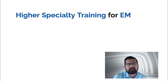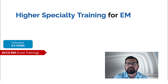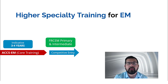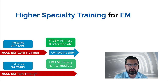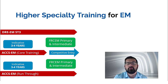Let's recap and add more detail about what higher specialty training in emergency medicine looks like. There are three types of entry: ACCS-EM core training (which could be three or four years — the curriculum may change from 2021), the run-through pathway where there is no competitive entry to higher training but you still must pass FRCEM primary and intermediate, and DRE-EM ST3 where you also don't need competitive entry if you demonstrate your competencies well enough at ST3 level to progress to ST4.